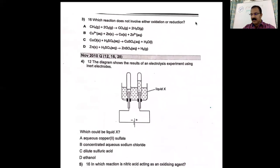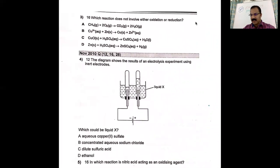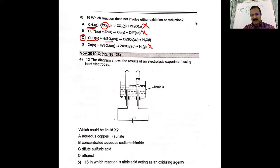Moving on to question three: which reaction does not involve either oxidation or reduction? Any reaction where oxygen reacts with an element or compound is oxidation. The reaction with Cu²⁺ and Zn is a metal displacement reaction — also redox. The next one is an acid-base reaction. Acid-base reactions are not redox — you can check in terms of oxidation numbers, there is no change. So the correct answer is C. The last option is also a metal displacement reaction and therefore a redox reaction.